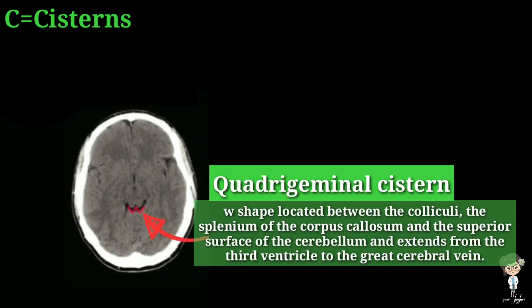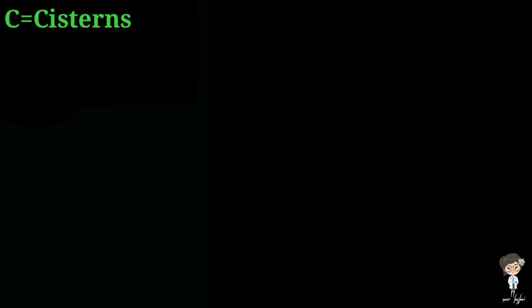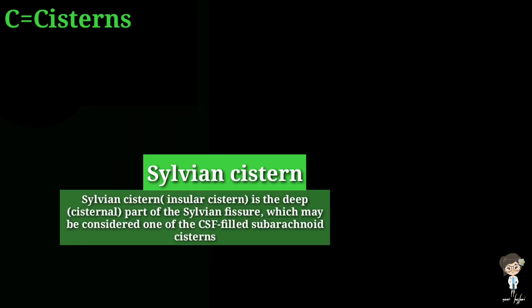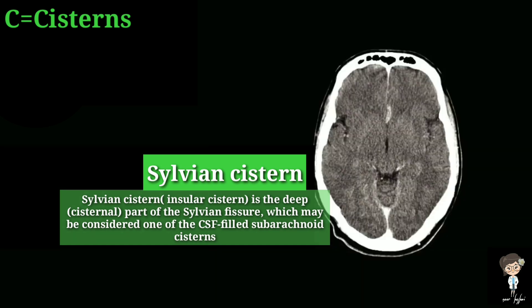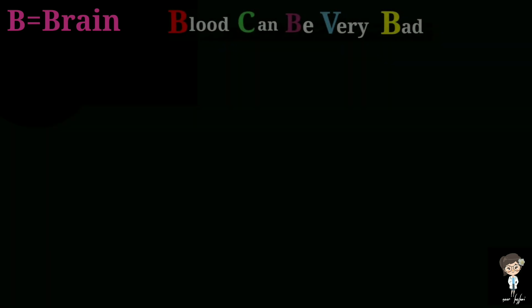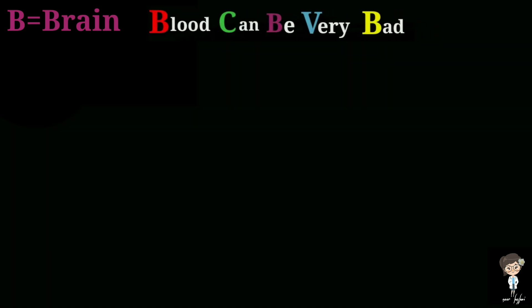The quadrigeminal cistern has a W-shaped appearance between the colliculi, the splenium of the corpus callosum, and the superior surface of the cerebellum, which extends to the third ventricle to create the cerebral vein. The sylvian cistern is the last and most important cistern to be seen on CT brain, also called the insular cistern, located in the deep part of the sylvian fissure between the temporal and frontal lobes.